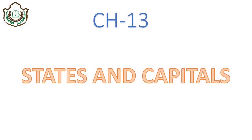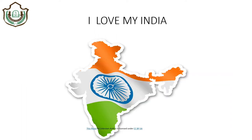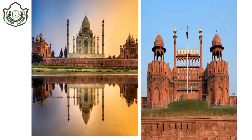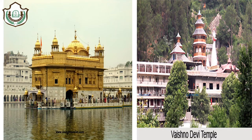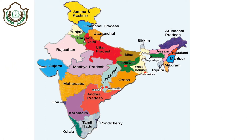Let's start chapter number 13: States and Capitals. As you all know, we live in India. Today we are going to learn some states and their capitals in our country. As you can see on the screen, these are some famous tourist places like Taj Mahal, Red Fort, Dal Lake, Golden Temple, Vaishno Devi Temple. Are these located in one state of India? No, all these are located in different states. Today we will learn states and their capitals.